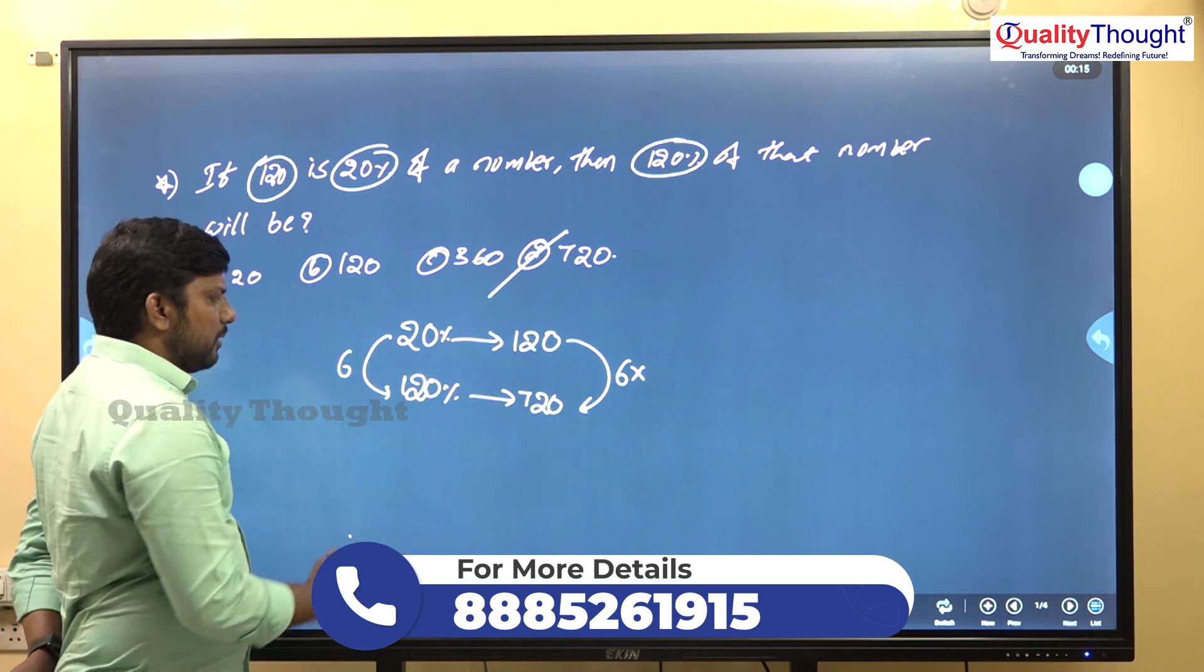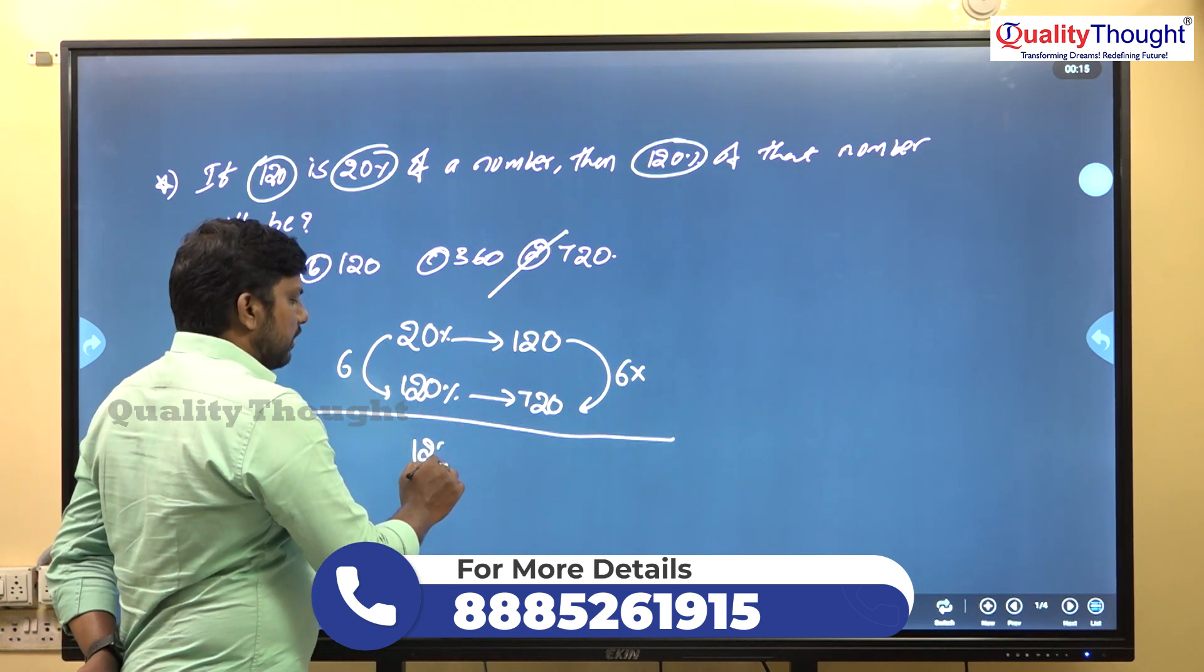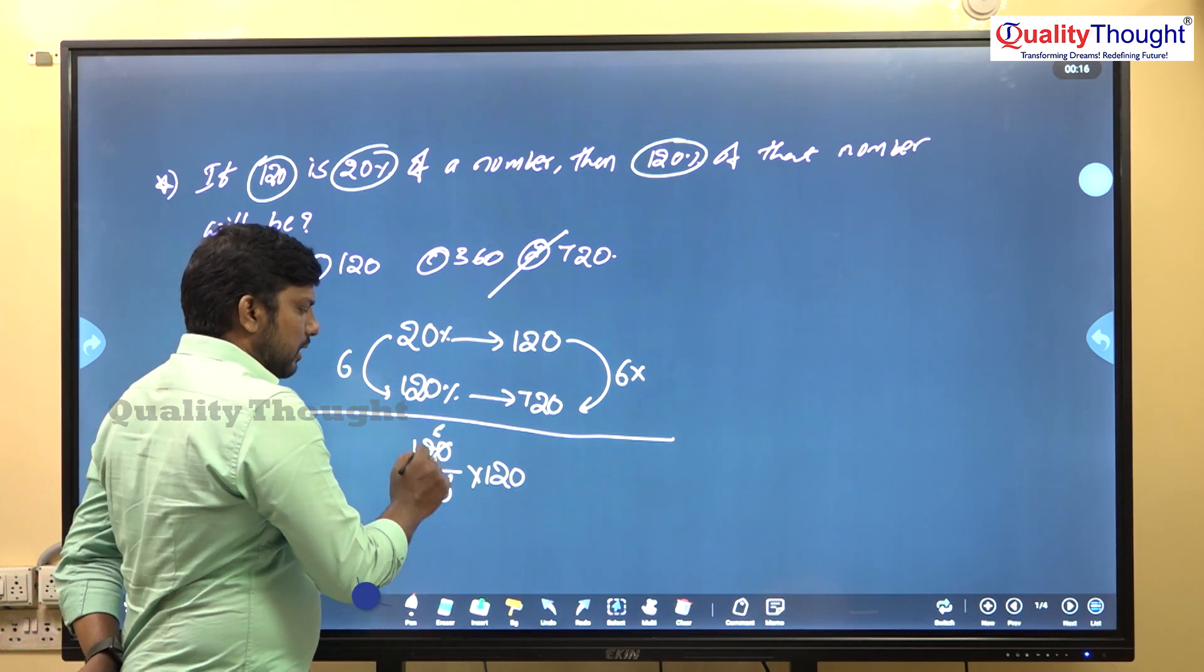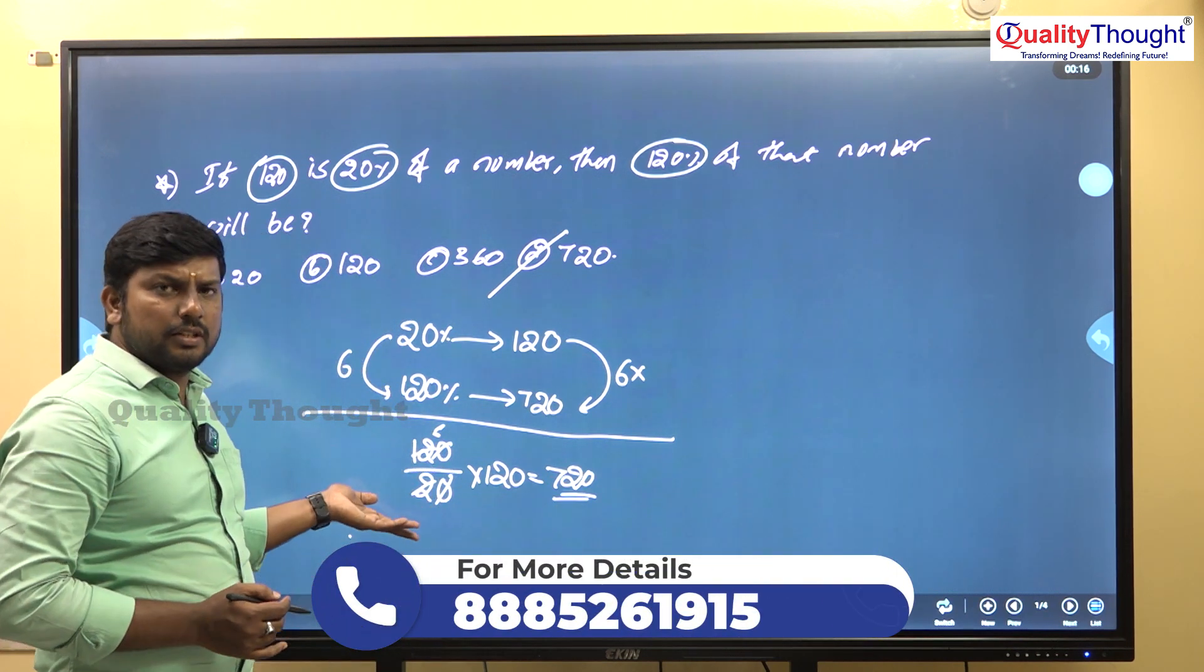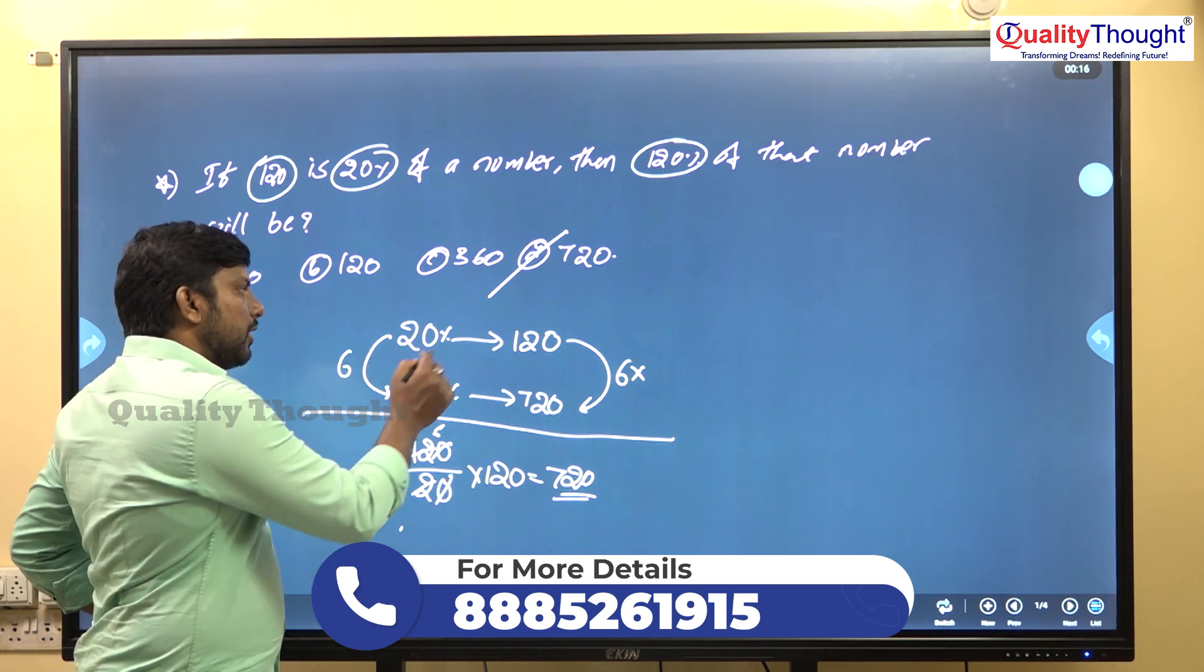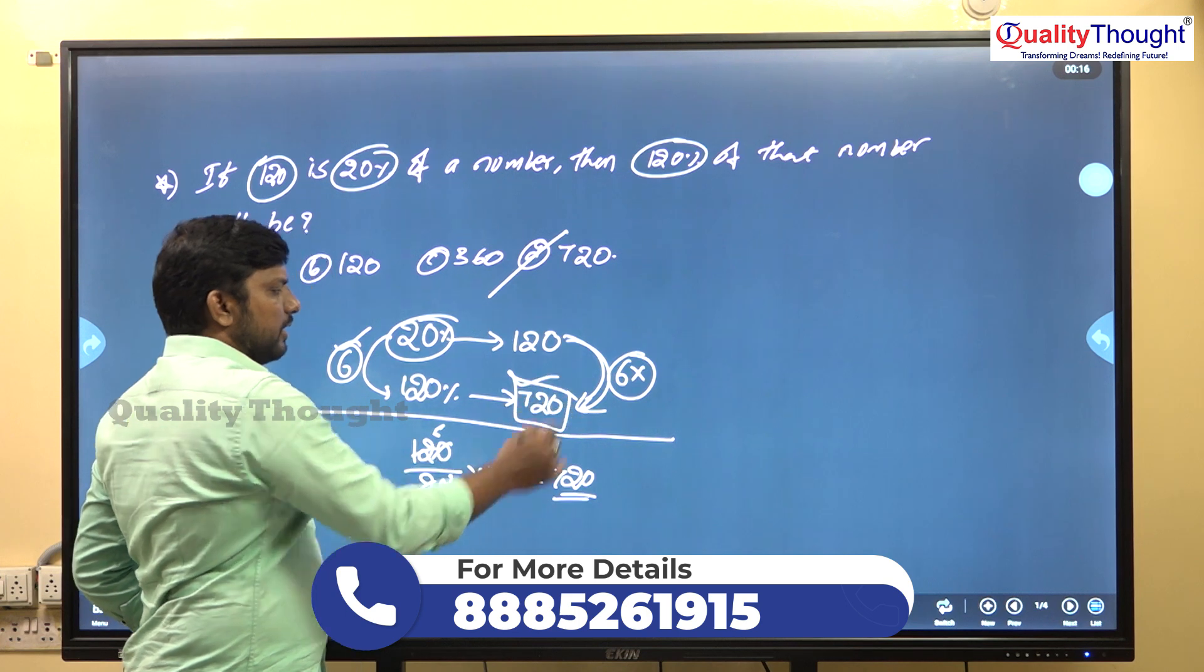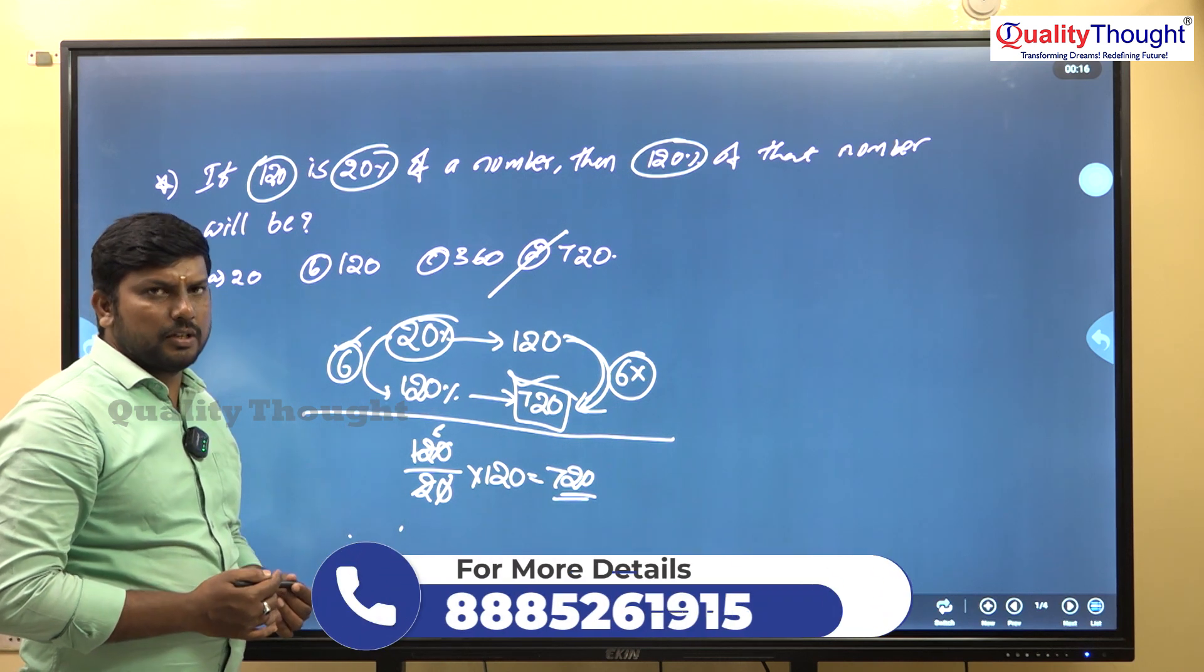We can also use cross multiplication. 120 by 20 into 120. Zero zero cancel, two ones, two sixes. So 120 times 6 equals 720. That's the answer.